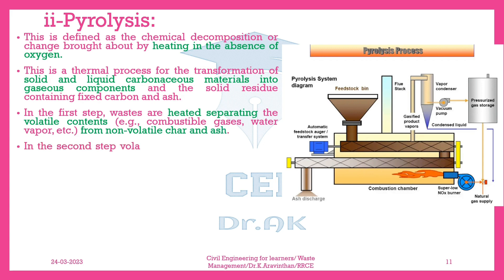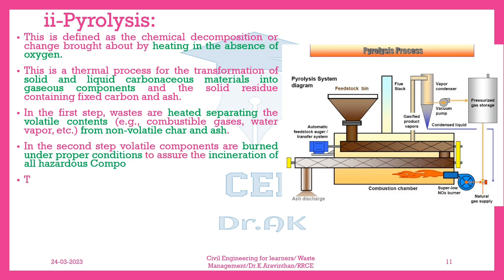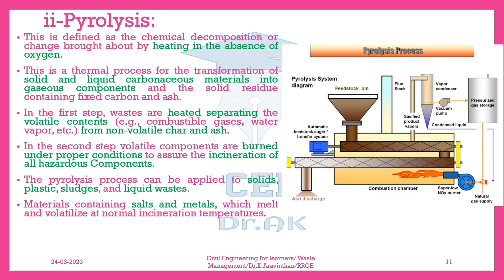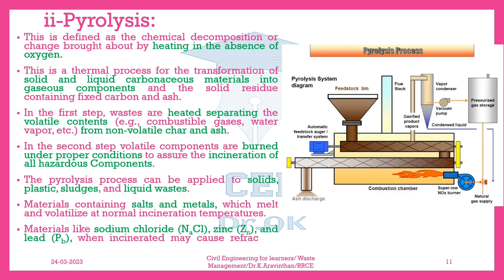In the second step, volatile components are burned under proper conditions to assure the incineration of all hazardous components. The pyrolysis process can be applied to solids, plastic, sludges, and liquid wastes. Materials containing salts and metals which melt and volatilize at normal incineration temperatures — such as sodium chloride (NaCl), zinc (Zn), and lead (Pb) — when incinerated may cause refractory spalling and fouling of the heat exchanger surface.